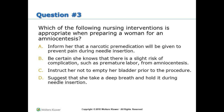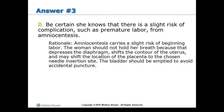Practice Question 3: Which nursing intervention is appropriate when preparing a woman for an amniocentesis? A) Inform her that narcotic pre-medication will be given to prevent pain during needle insertion; B) Be certain she knows there is a slight risk of complication, such as premature labor, from amniocentesis; C) Instruct her not to empty her bladder prior to the procedure; D) Suggest she take a deep breath and hold it during needle insertion. Answer: B — Be certain she knows there is a slight risk of complication, such as premature labor, from amniocentesis. Rationale: Amniocentesis carries a slight risk of beginning labor. The woman should not hold her breath because that depresses the diaphragm, shifts the contour of the uterus, and may shift the location of the placenta to the chosen needle insertion site. The bladder should be emptied to avoid accidental puncture.